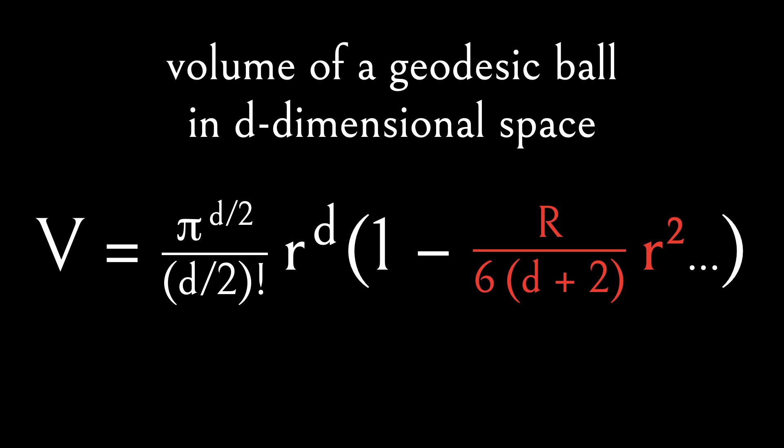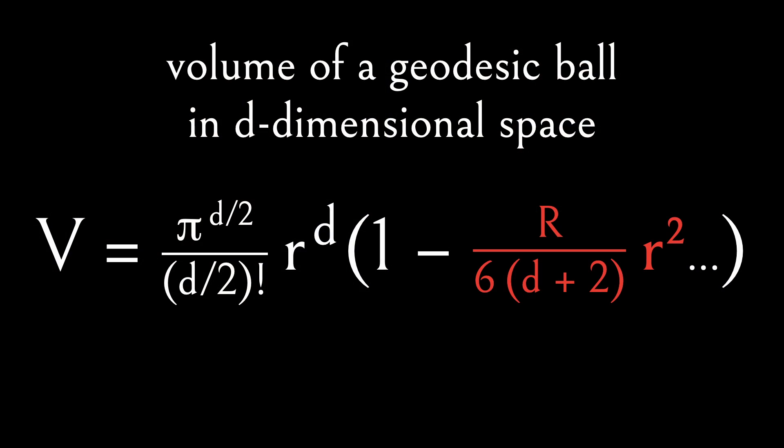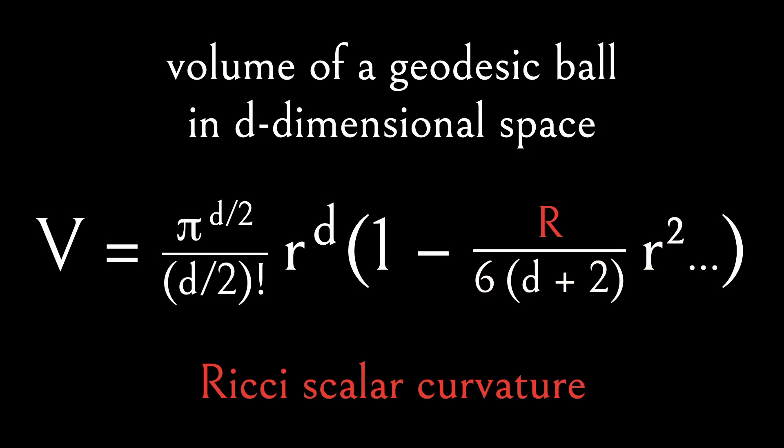The first subleading term, which is proportional to R squared — so the dimension is contributing exponentially, and this is contributing quadratically — that first subleading term turns out to be proportional to what's called the Ricci scalar curvature, which is something that appears in the Einstein equations. It's the simplest kind of curvature invariant, a purely scalar quantity that you can define for an arbitrary surface.